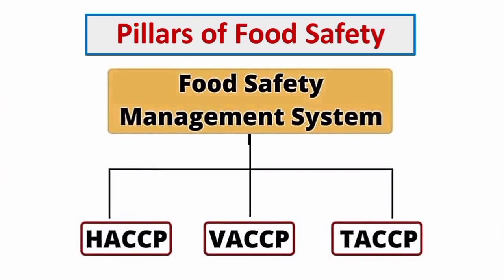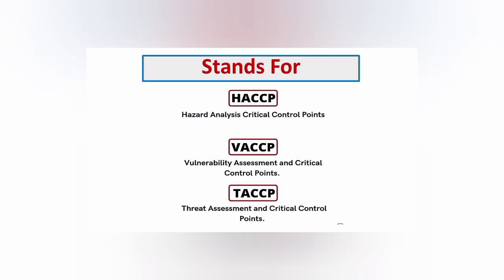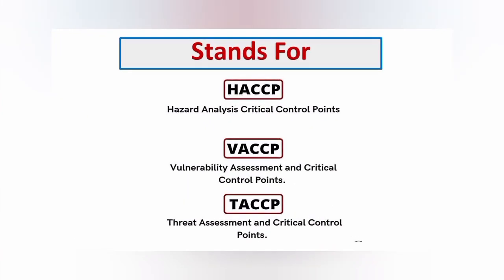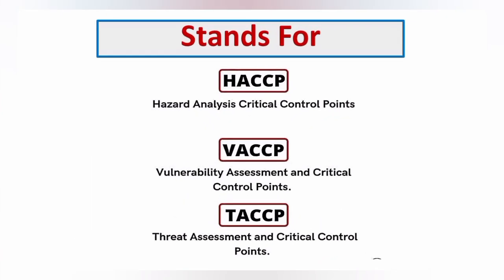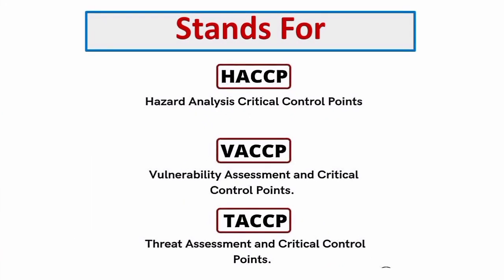VESCP and TESCP. These are the three pillars of the food safety management system. Now, what do they stand for? HACCP stands for hazard analysis critical control points.